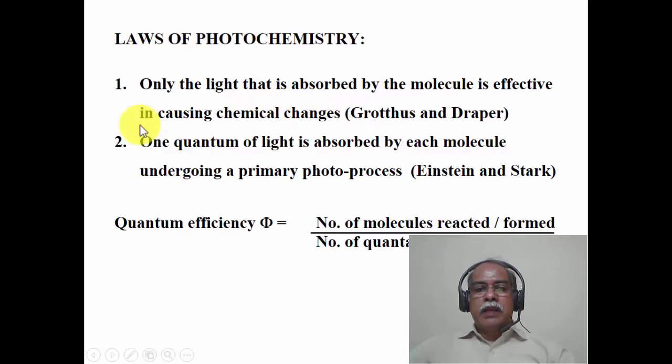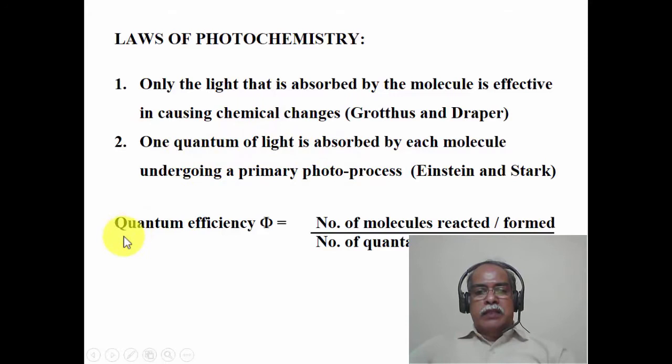The second law, proposed by Einstein and Stark, states that one quantum of light is absorbed by each molecule undergoing a primary photochemical process. In other words, to produce an excited state, at least one photon must be absorbed. As a corollary, one can define quantum efficiency. Photochemical reactions are characterized by quantum efficiency — essentially the ratio of the number of molecules reacted to the number of quanta of light absorbed.